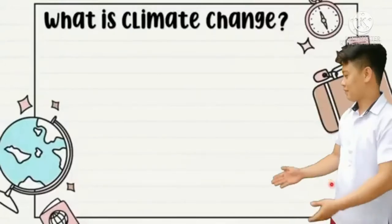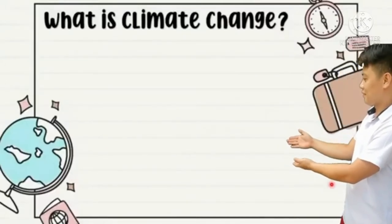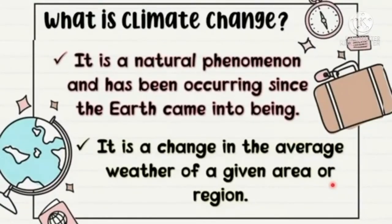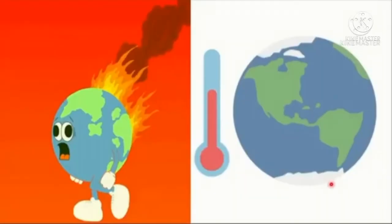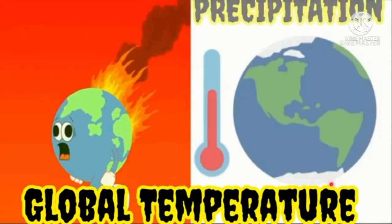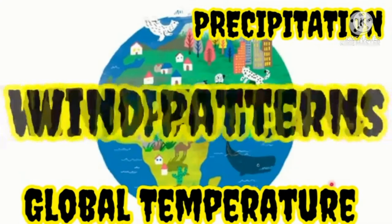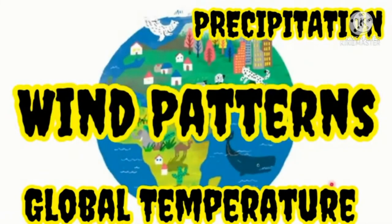Let us define what climate change is. It is a natural phenomenon and has been occurring since the earth came into being. It is a change in the average weather of a given area or region. It has something to do with significant changes in global temperature, precipitation, wind patterns, and other measures of climate that occur over several decades or longer.